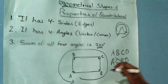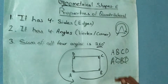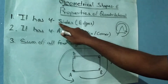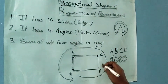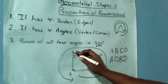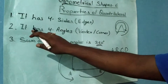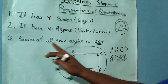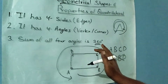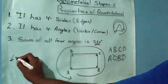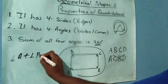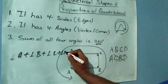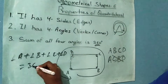Let's revise the properties of a quadrilateral. First, it has four sides: AB, BC, CD, and DA. Second, it has four angles: angle A, angle B, angle C, and angle D. Third, and most important, the sum of angles — angle A plus angle B plus angle C plus angle D — is equal to 360 degrees.